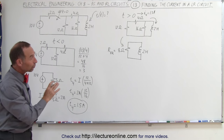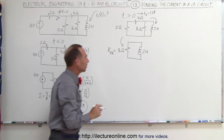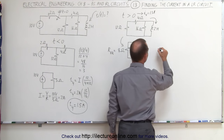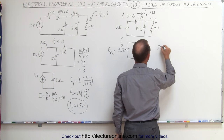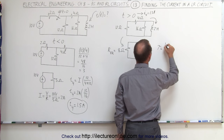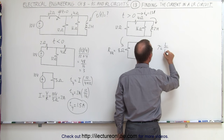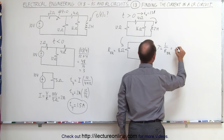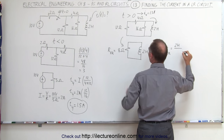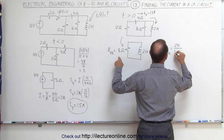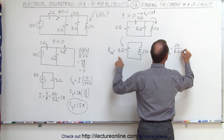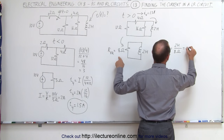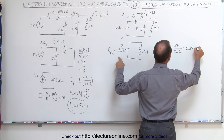From that, we can find our time constant. The time constant is defined as the inductance divided by the equivalent resistance. So in this case, that would be 2 Henrys divided by 8 ohms, which equals 0.25 seconds.